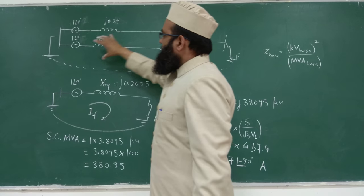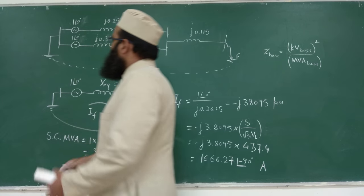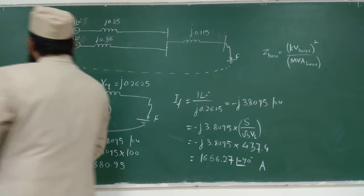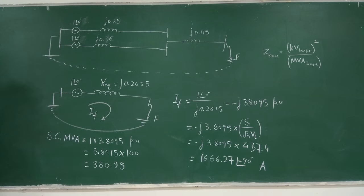You will get the actual value of current supplied by each generator. The current supplied by G1 equals total fault current (on low voltage side) × X_G2_branch / (X_G1_branch + X_G2_branch). Similarly for G2. Subtract one from the total to get the other. This was all about today's lecture — thank you very much. If you have any doubt, just contact me.